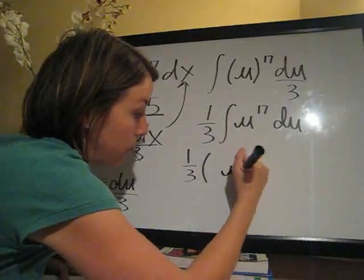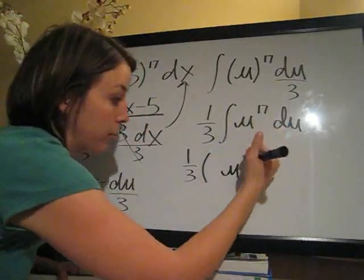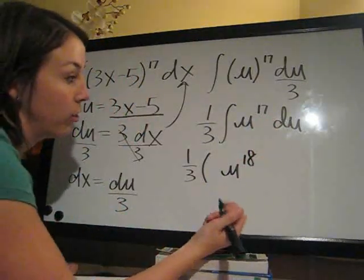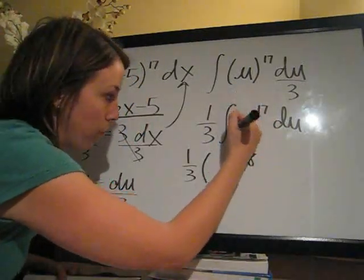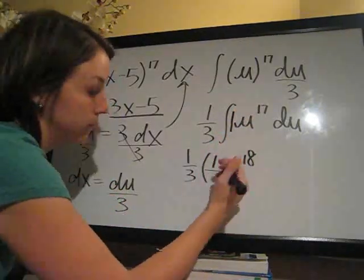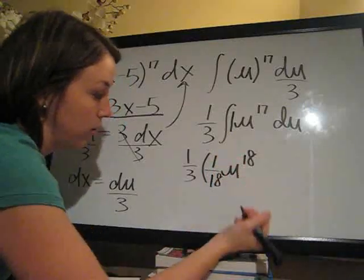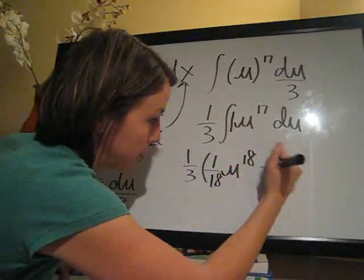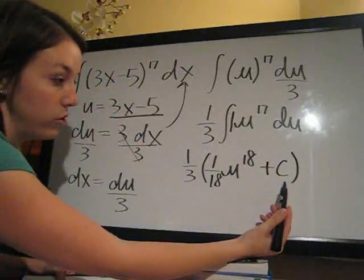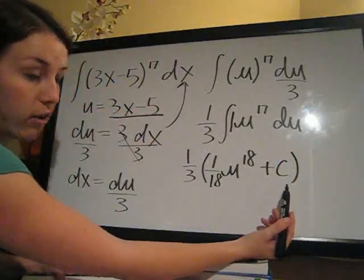So, u add 1 to the exponent, which we always do when integrating, and then divide the coefficient, which is 1 here, that's implied, 1 over the new exponent, 18. And then, of course, plus c, which we always do when integrating, add the constant back in.